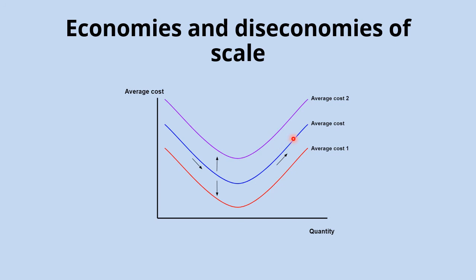We can also show external economies and diseconomies of scale on the same diagram. If an individual business experiences external economies of scale — benefits from the growth of the entire industry — they haven't changed their own scale of production, but their average costs come down regardless. This causes the whole average cost curve to shift downwards for all possible quantities of output. Equally, external diseconomies of scale would mean average costs are higher for all units of output, so the average cost curve shifts upwards to a higher position.